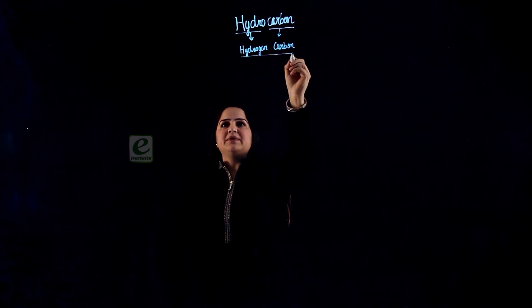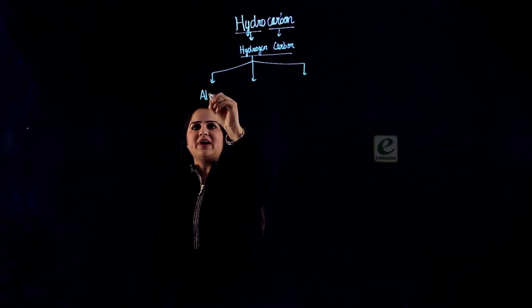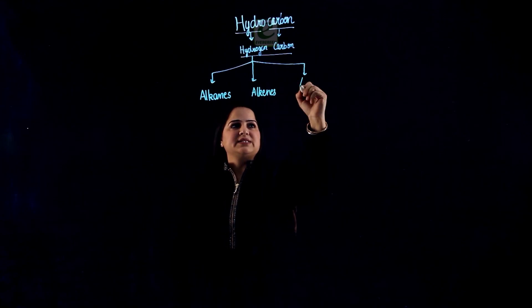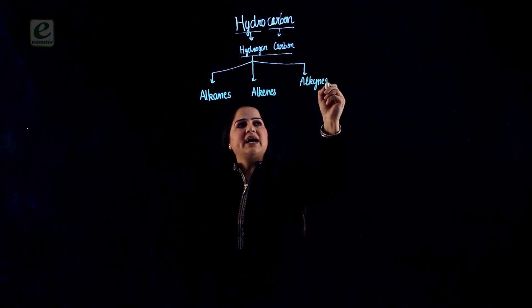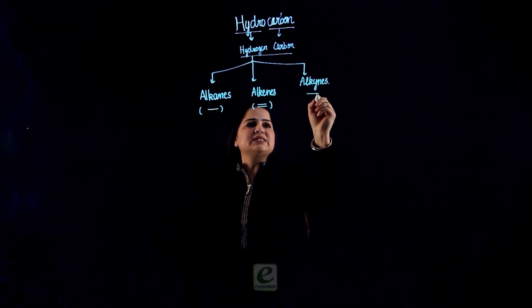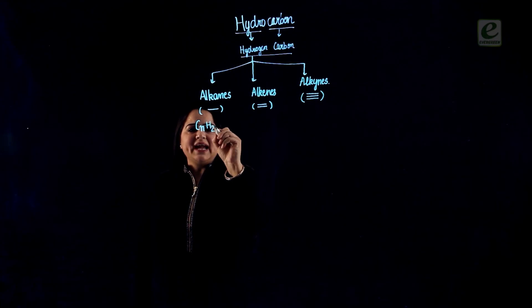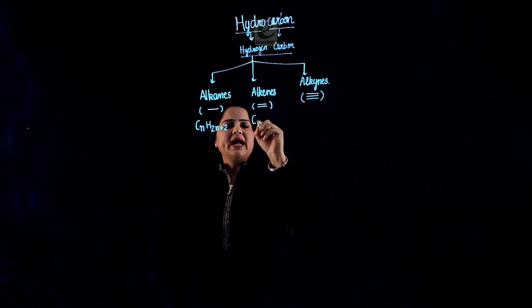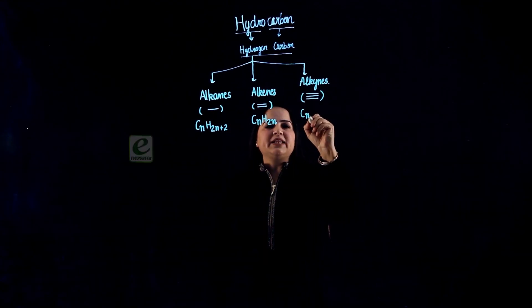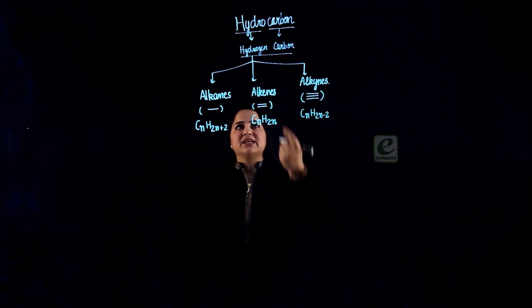If we study these hydrocarbons, we split them up into three parts. We have three types of hydrocarbon: alkanes, alkenes, and alkynes. Alkanes are compounds with a single bond, alkenes are compounds with a double bond, and alkynes are compounds with a triple bond. Alkanes can be represented with the general formula CnH2n+2, alkenes with CnH2n, and alkynes with CnH2n-2. These three categories come under hydrocarbon.